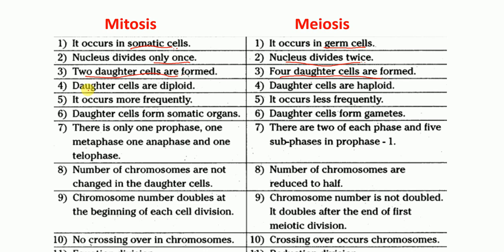In mitosis cell division, the daughter cells are diploid in nature — they have 2N chromosomes. Whereas in meiosis cell division, daughter cells are haploid — they have N number of chromosomes. Mitosis cell division occurs more frequently, whereas meiosis cell division occurs less frequently.